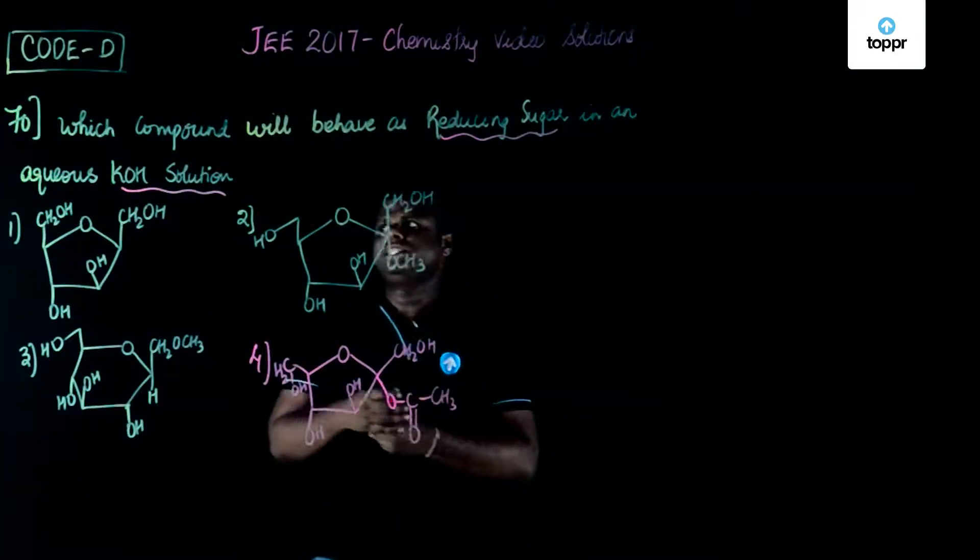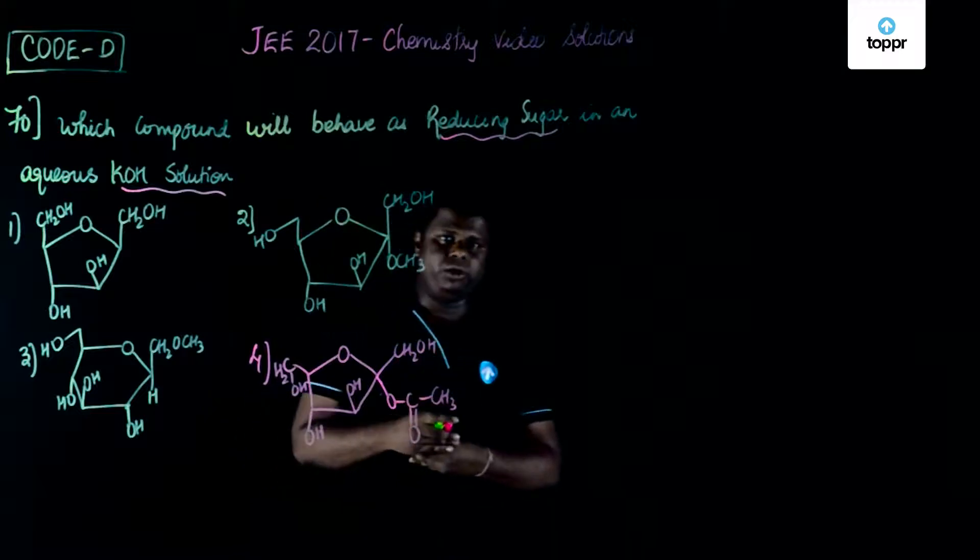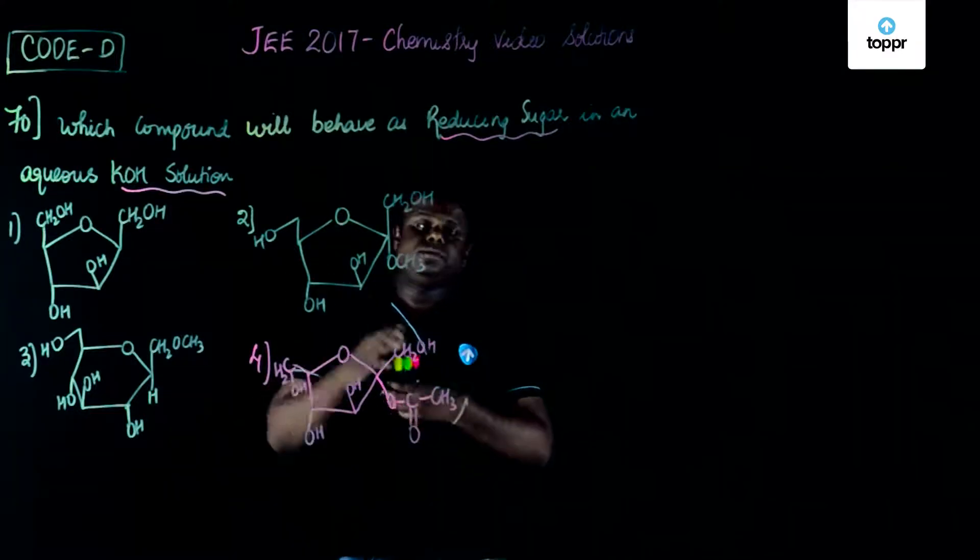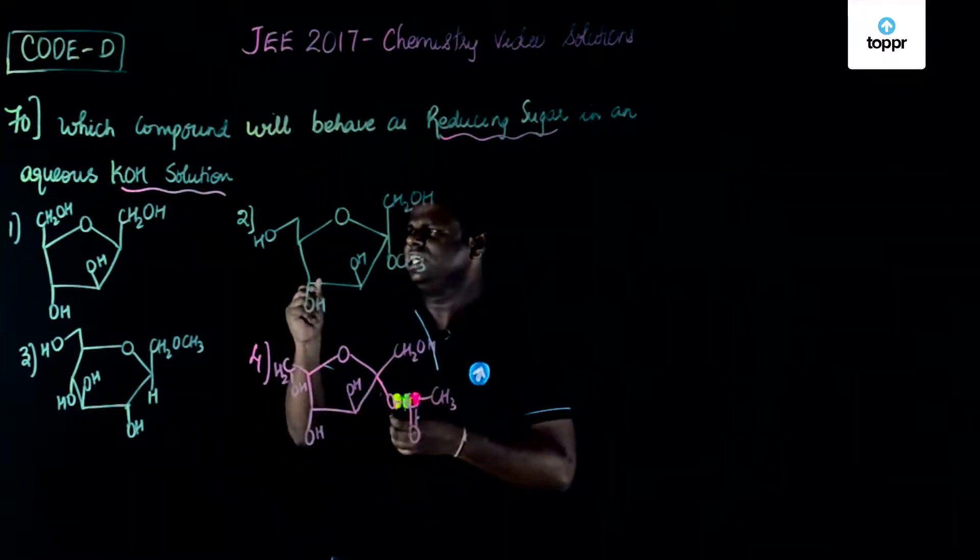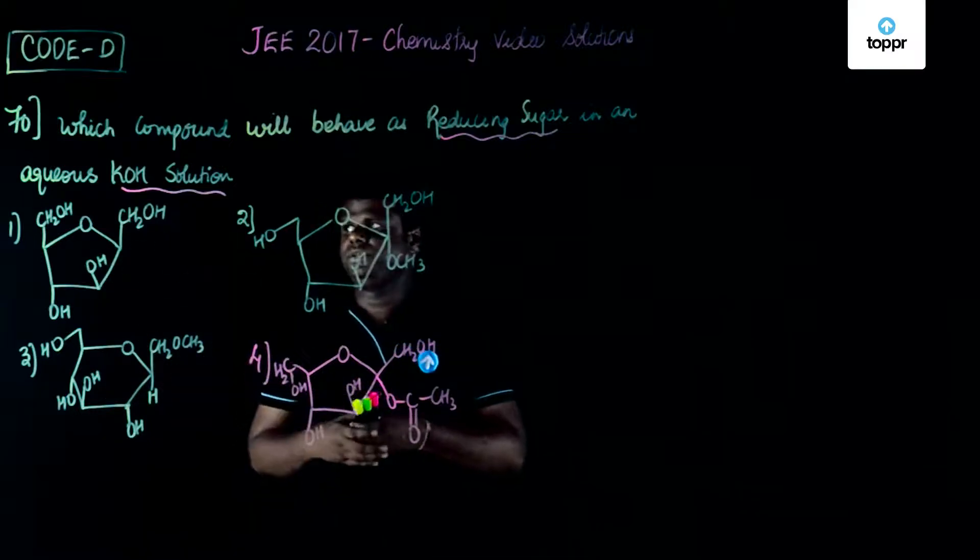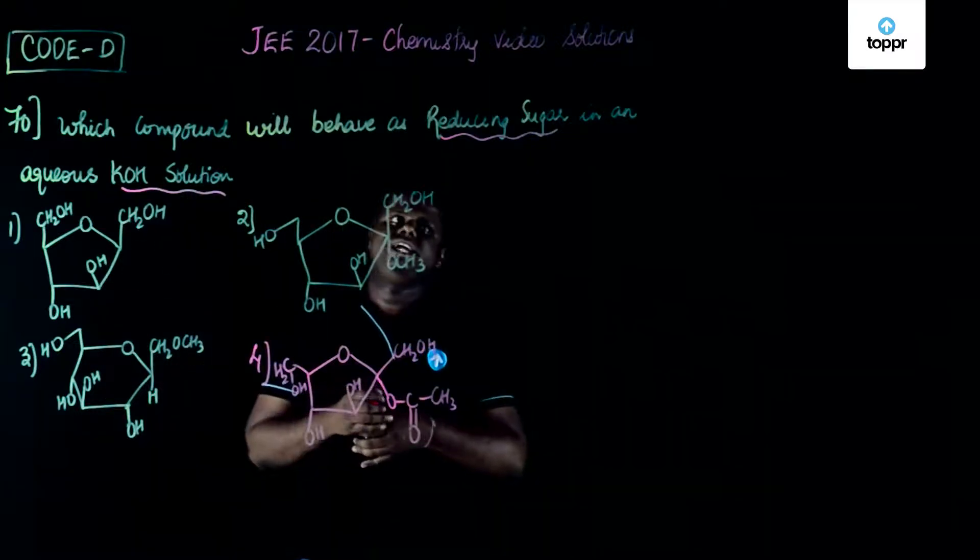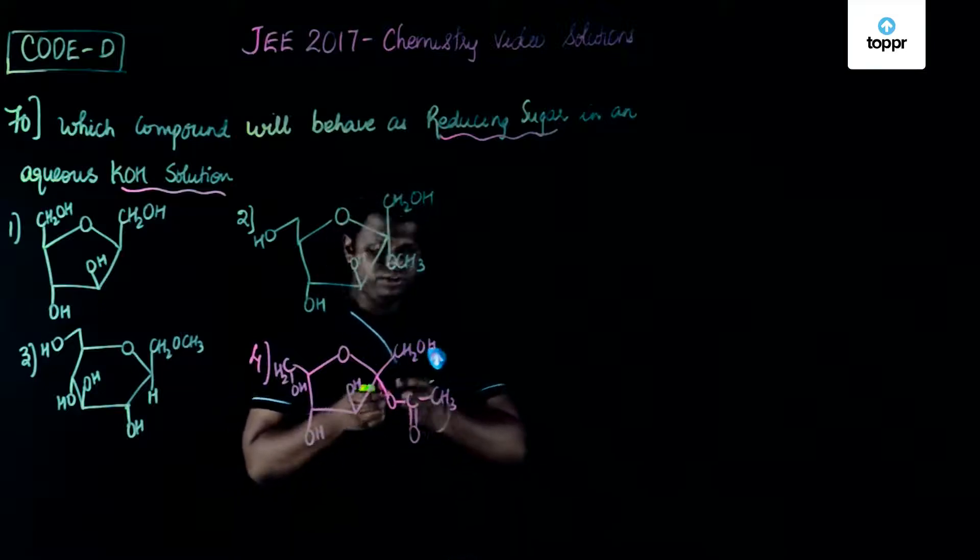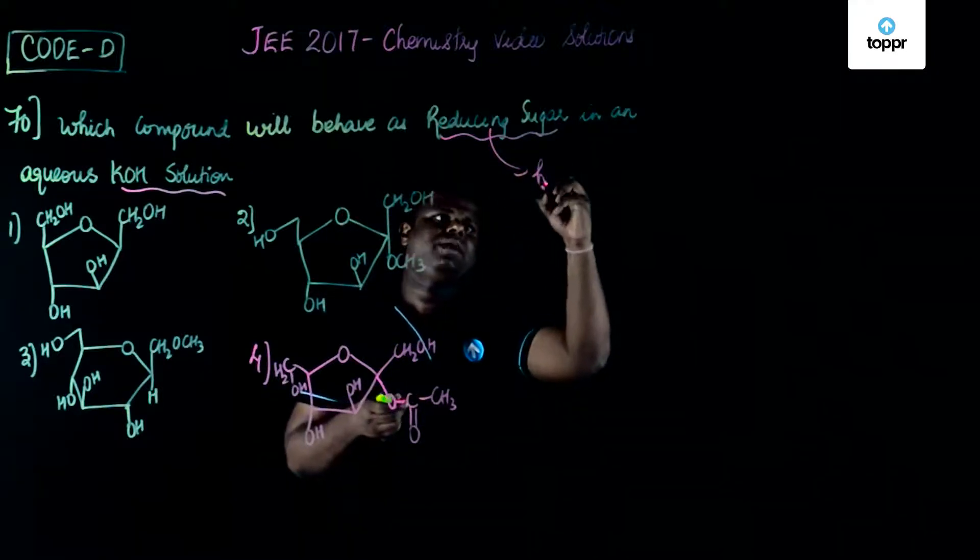Now let's discuss question number 70 which is from the section on carbohydrates, specifically biomolecules. A series of furanose and pyranose structures are given and they are asking which compound would behave like reducing sugar. Reducing sugar is basically something like a hemiacetal.